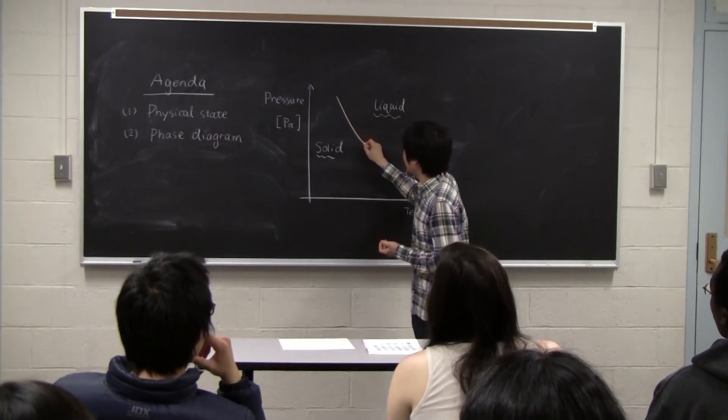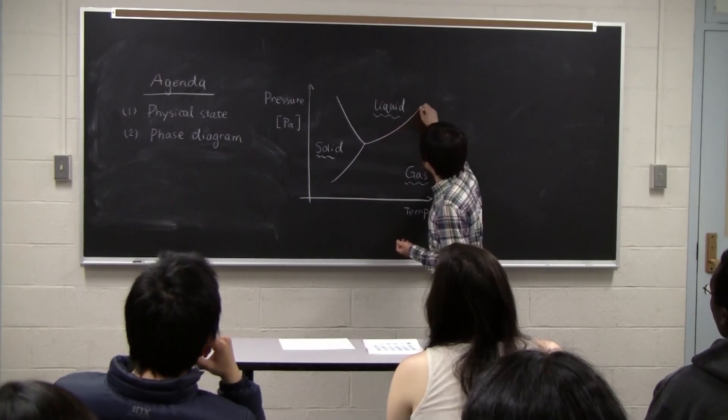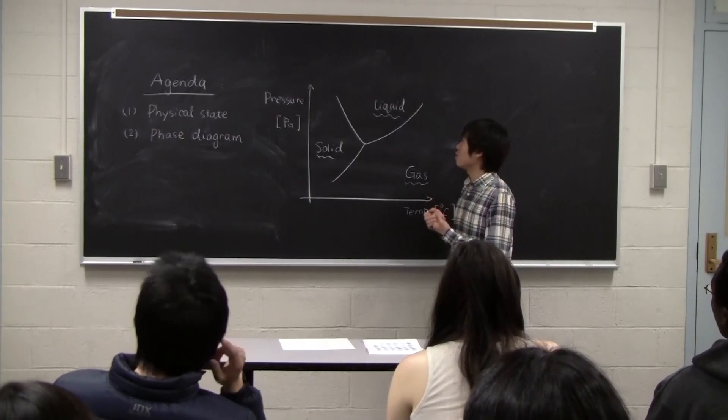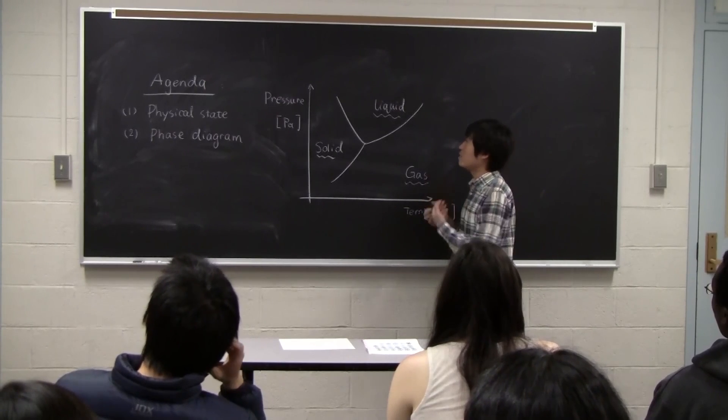So we have three different lines here. So each line represents a certain condition that two phases can coexist.